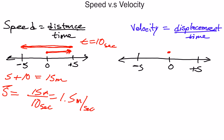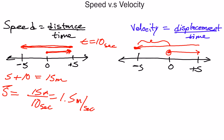You start at zero, travel five to the right, then turn around and go all the way to negative five — that's ten units back. Displacement means how far away you are from your starting point. You ended at negative five, so you're five units away from the origin, but since you're to the left, your displacement is negative five.